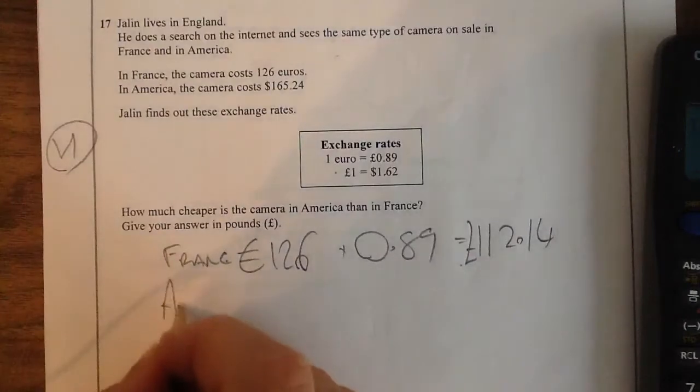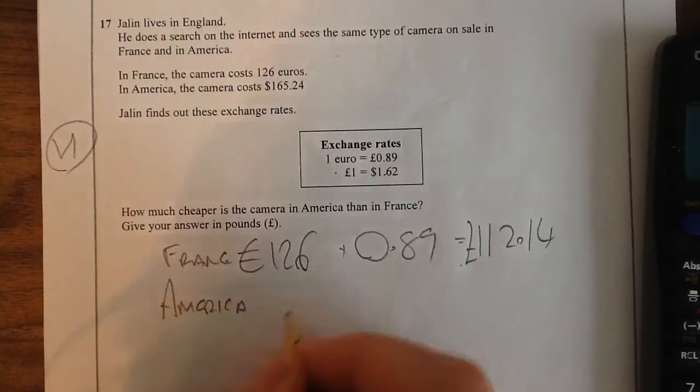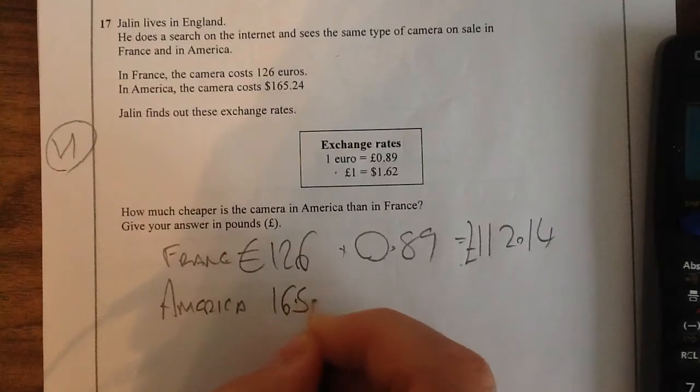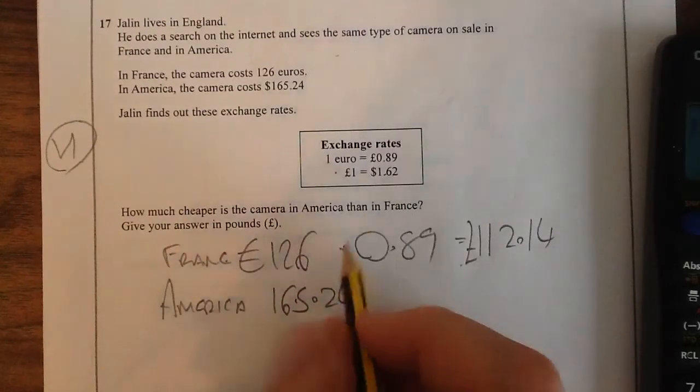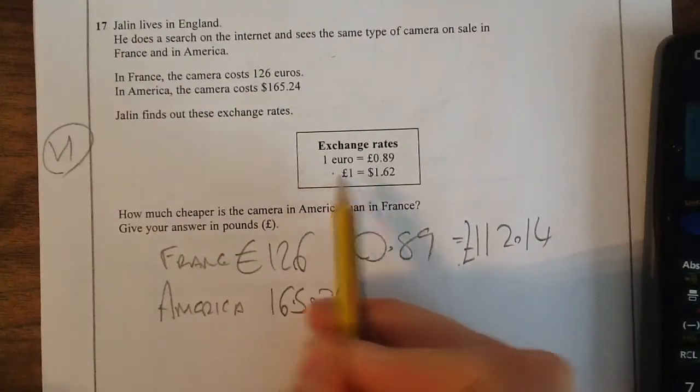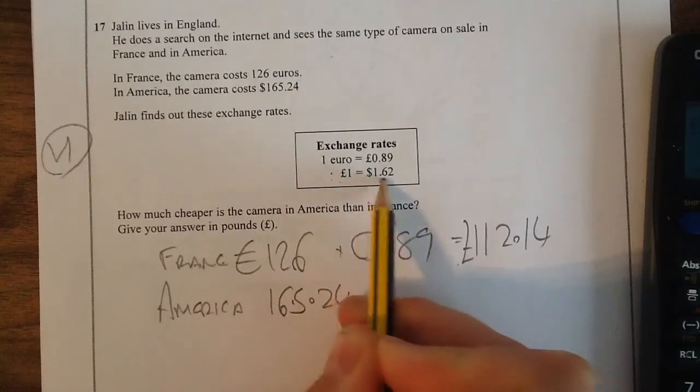Now if we do it in America, it's $165.24. It's giving us the other way around. If we're doing pounds to dollars, we multiply it by 1.62, but we're not.